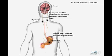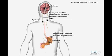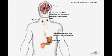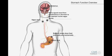After a meal, nerve signals travel from the hypothalamus, which is located at the bottom of the brain, all the way to the stomach through the vagus nerve. This results in stomach muscle contractions and eventually gastric emptying.